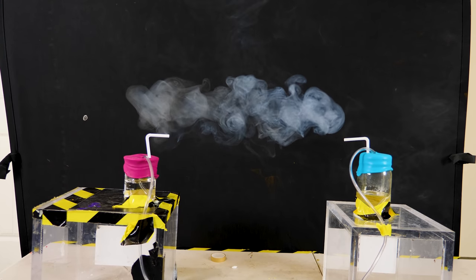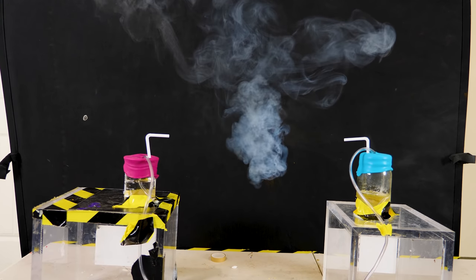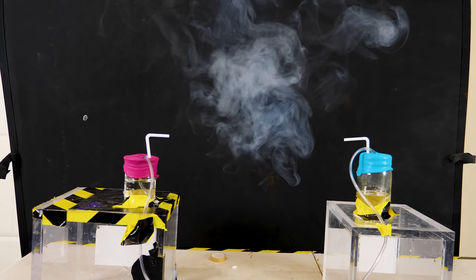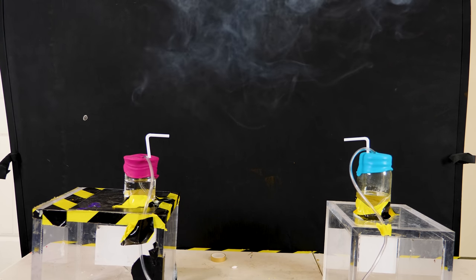Now you can kind of see a little bit of smoke come out of the hydrogen chloride bottle, even without the ammonia. But that's due to not actually seeing the hydrogen chloride. What you're actually seeing is tiny little water droplets mixed with the hydrogen chloride.